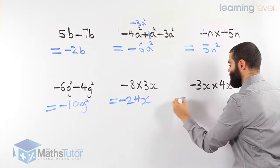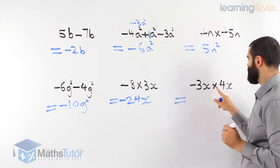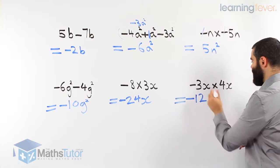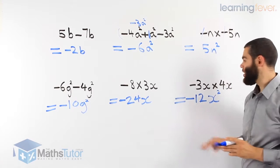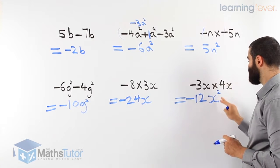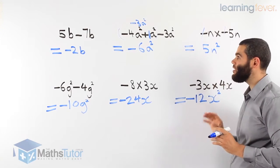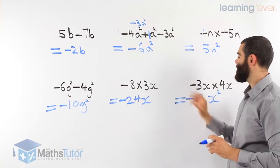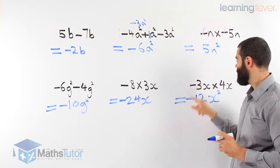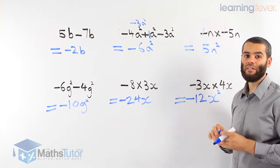Here we have negative 3x times 4x. 3 times 4 is 12, there is only one negative in the question so it stays, and x times x is x squared — giving negative 12x squared. This is the basics, very easy. What we do with normal numbers, we do with algebra as well. We just have to be careful with like terms when adding and subtracting. With multiplication, it doesn't matter — we can multiply everything together. One negative stays in the answer; two negatives cancel each other out and go bye-bye. Let's do some more examples.